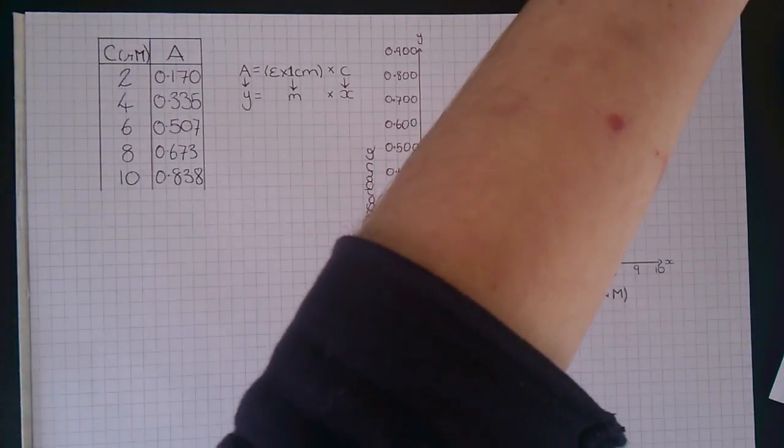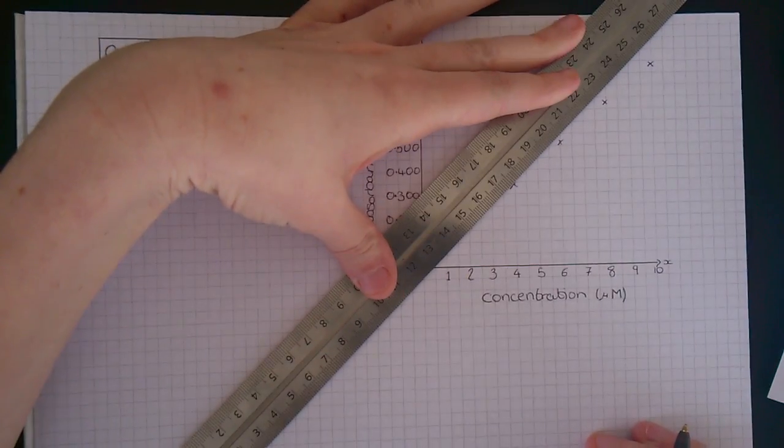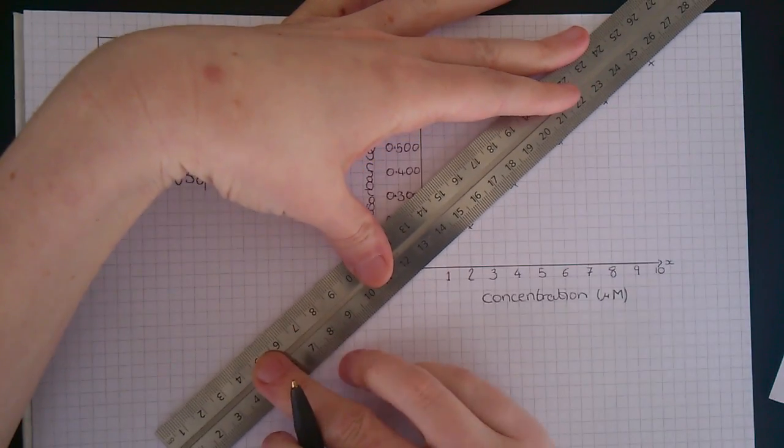Next, we need to draw a line of best fit. Remember that with experimental data, the line will rarely go through all of your points.